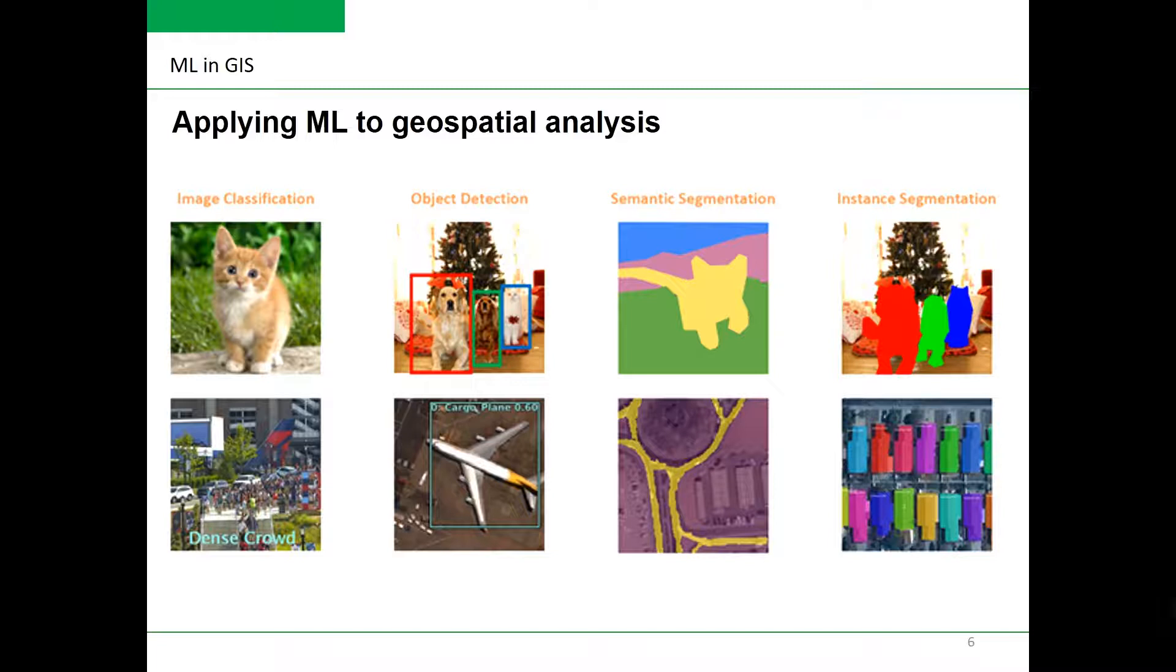One area of machine learning and deep learning that has done exceedingly well is computer vision, or the ability for computers to see. The examples of those computer vision tasks you can see on this slide. This is particularly useful for GIS as satellite, aerial, and drone imagery is being produced at a rate that makes it impossible to analyze and derive insight from traditional means.